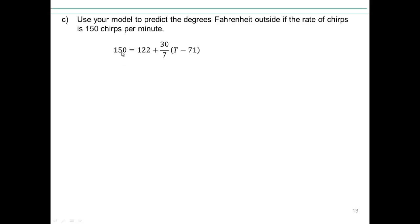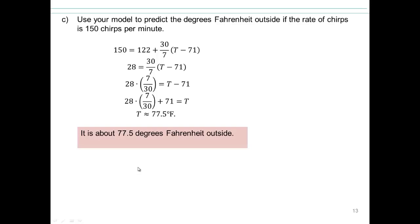All right, so we have 150 chirps per minute. And this is the equation. And then you can solve for T. So subtract 122. We have 28 equals 30 over 7 times T minus 71. Multiply both sides by 7 over 30. And then add 71. And you'll end up with about 77.5 degrees Fahrenheit. That's the temperature outside. So it's about 77.5 degrees Fahrenheit outside if you could hear 150 chirps based on your model.